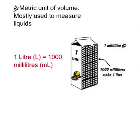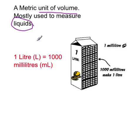So let's look at millilitres and litres. They're a metric unit of volume, which is mostly used to measure liquids. So litres and millilitres measure liquids. One litre is equivalent to 1000 millilitres.